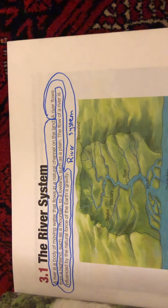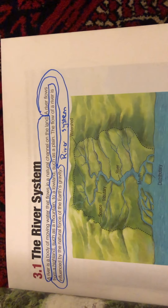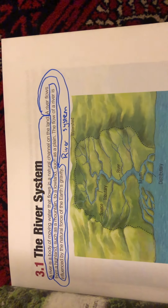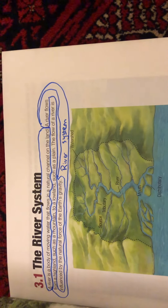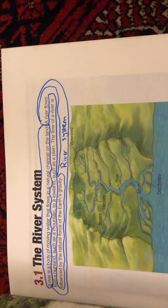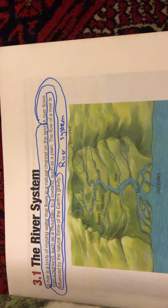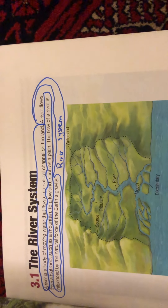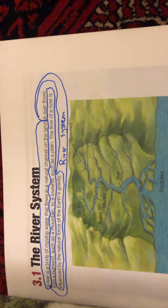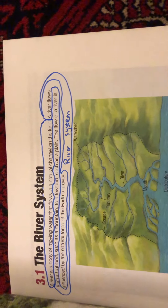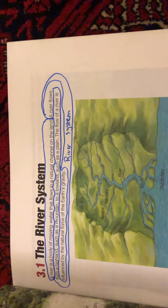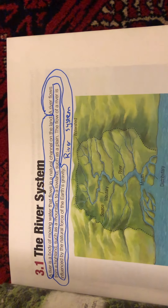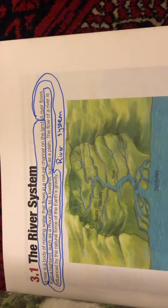A river is a body of moving water that flows in a natural channel on the land. A river flows from high land such as a mountain to a low land such as a plain. The flow of a river is influenced by the natural force of the earth's gravity.